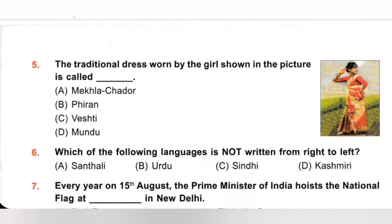6th. Which of the following languages is not written from right to left? A. Santali, B. Urdu, C. Sindhi, D. Kashmiri. Santali language is written from left to right, while Urdu, Sindhi and Kashmiri languages are written from right to left. So option A, Santali, is the correct answer.